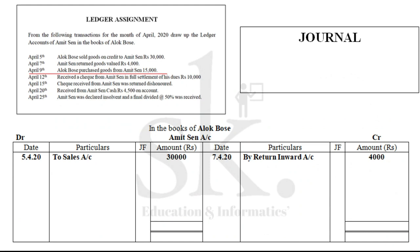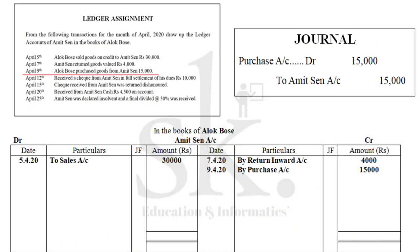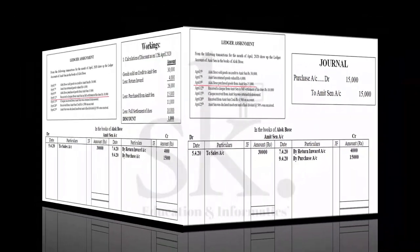On 9th April, Alok Bose purchased goods from Amit Sen for Rs 15,000. Since Alok Bose has purchased goods from Amit Sen, it will be purchase account debit to Amit Sen, because Amit Sen is a giver. The journal entry is purchase account debit to Amit Sen. So on the credit side of Amit Sen's account, purchase account will be recorded — on 9th April 2020, by purchase account Rs 15,000.